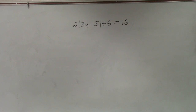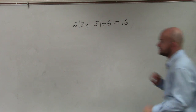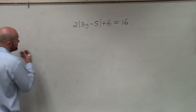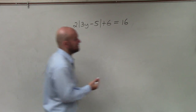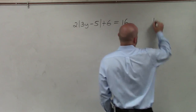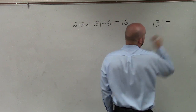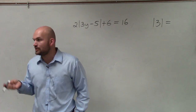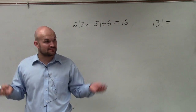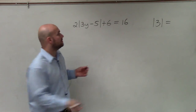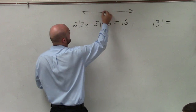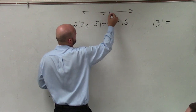When dealing with absolute value equations, the main important thing to understand is basically what an absolute value is. The absolute value of a number tells us the distance from 0. And if you remember when we did inequalities, we graphed on a number line.